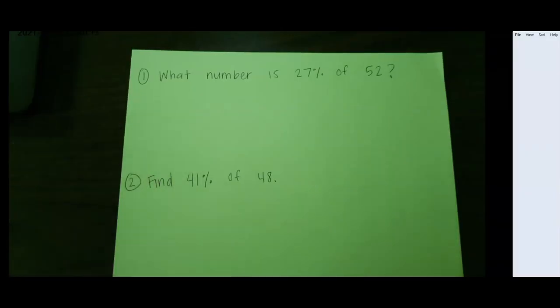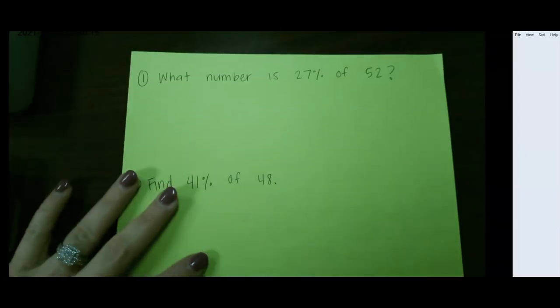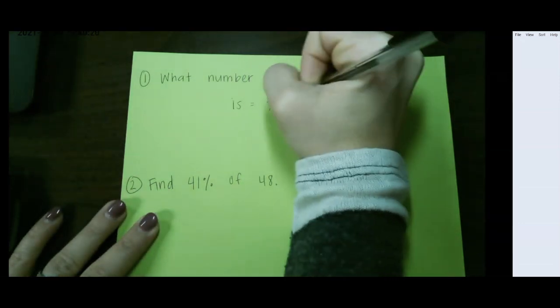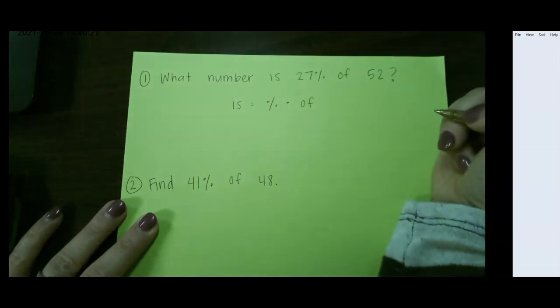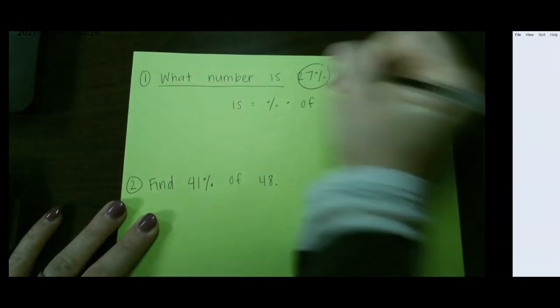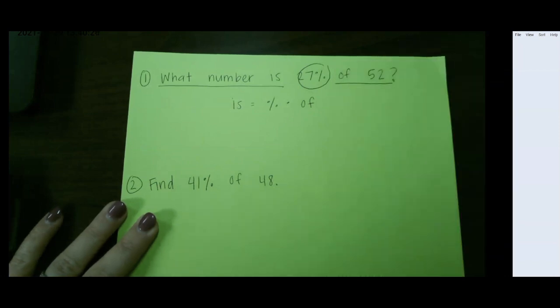Let's look at some examples. What number is 27% of 52? So if we use is equals percent times of, we have what number is 27% of 52?